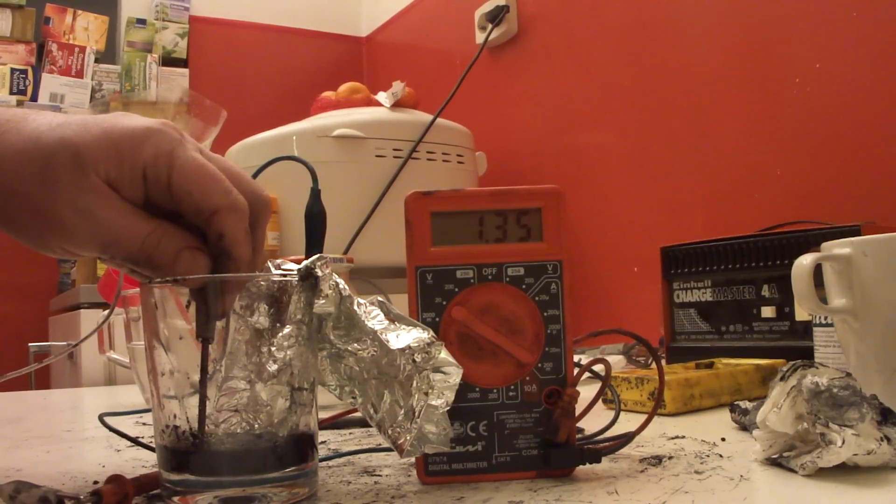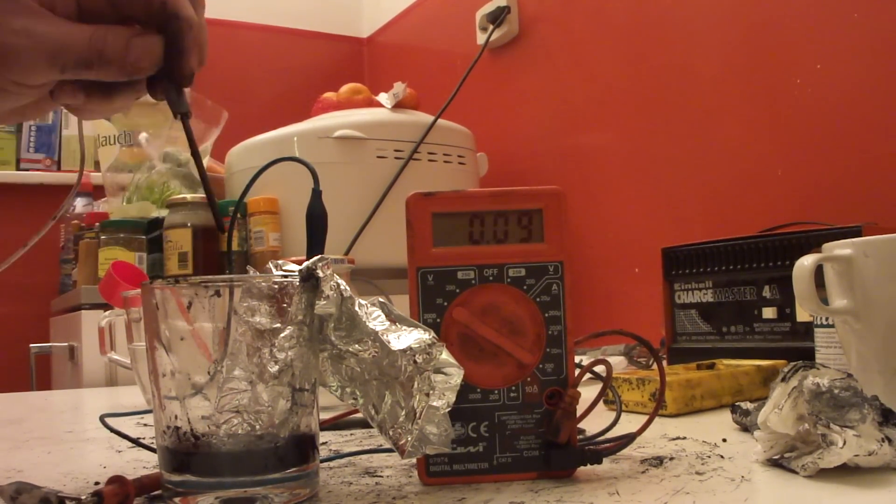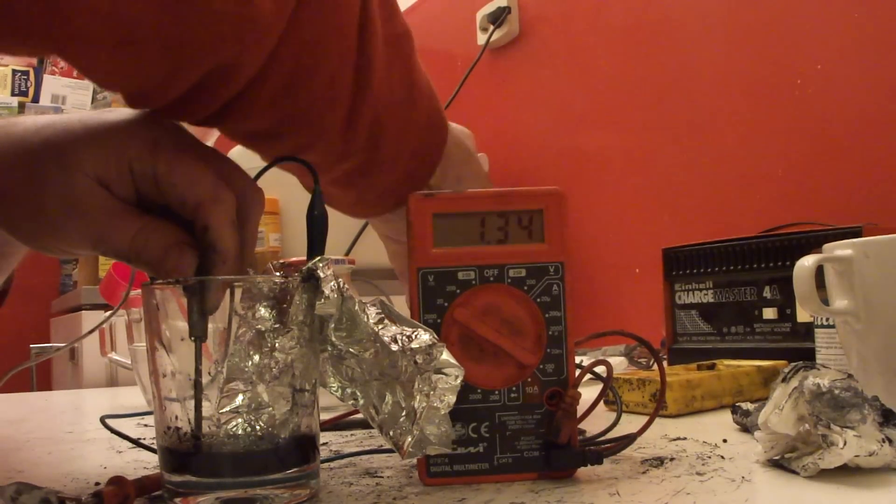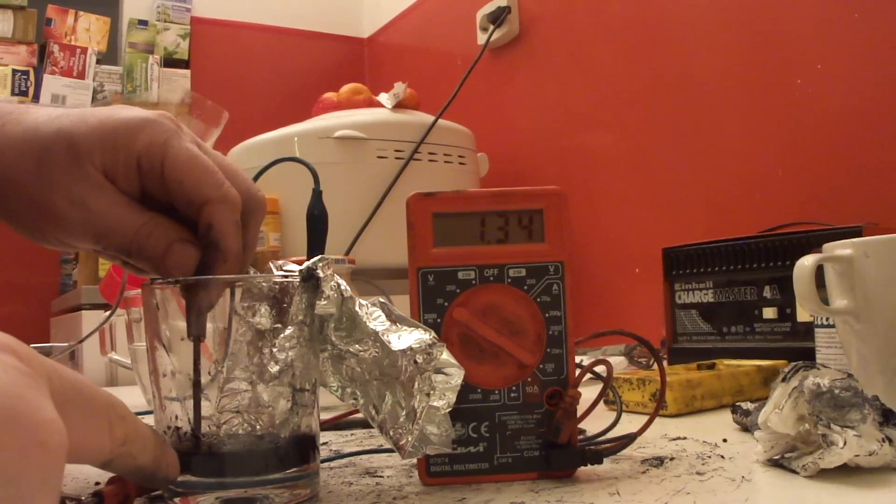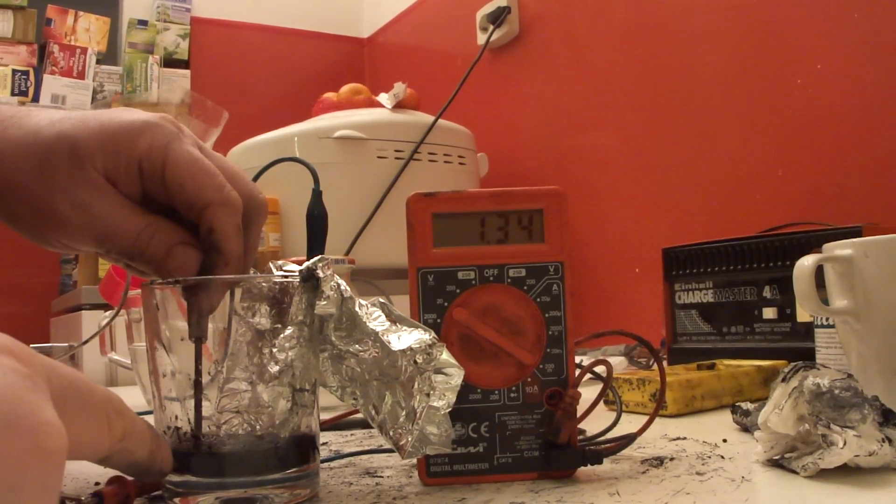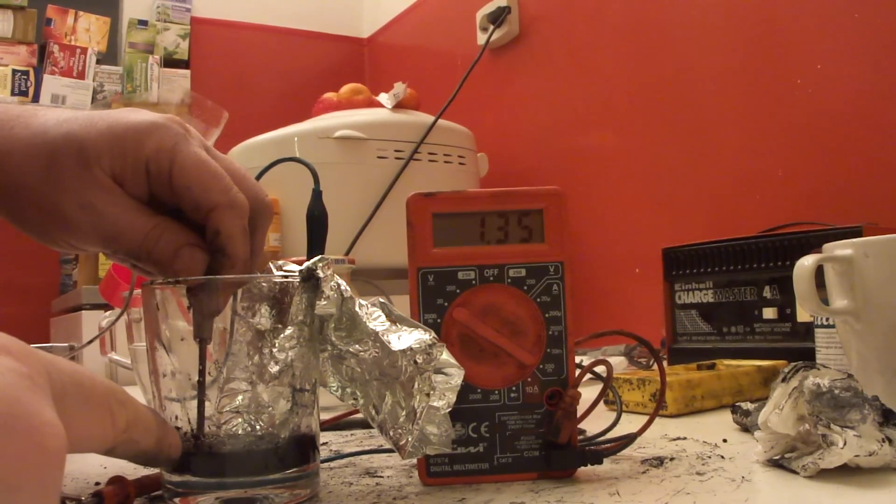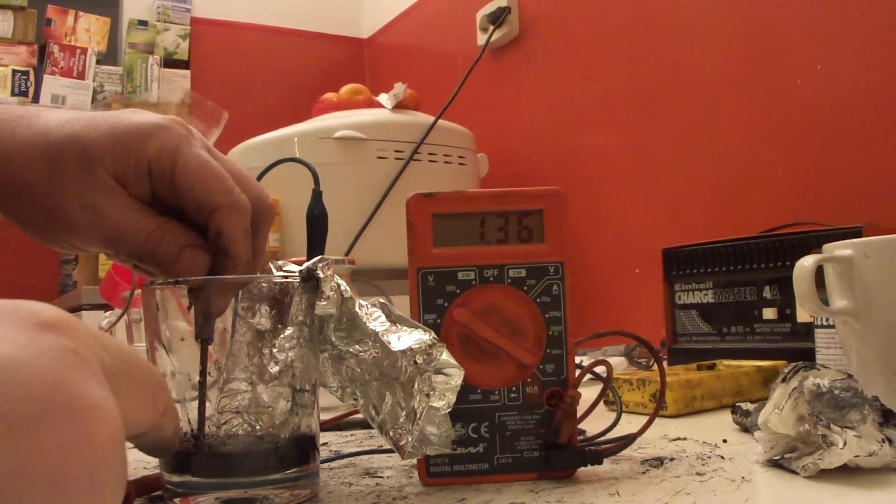You can see the voltage is rising now. I have now used aluminum foil with a graphite electrode and with potassium carbonate - that's the optimal mixture. I also have lamp black in this mix here, so that's maybe why the voltage is not so high.